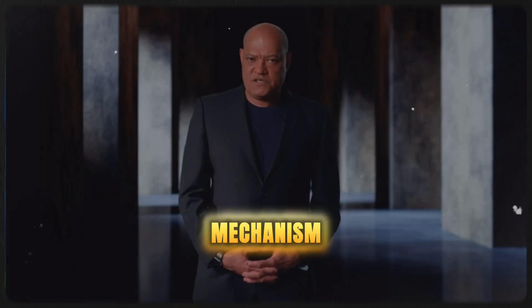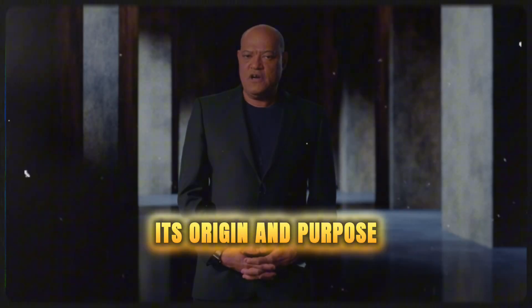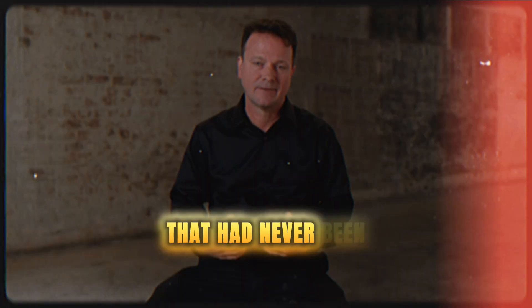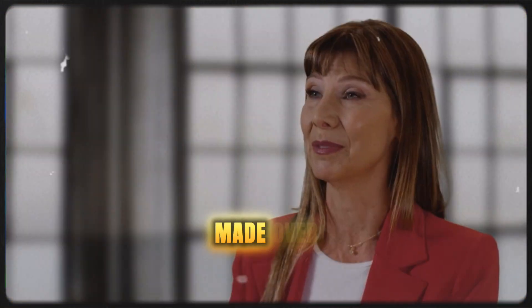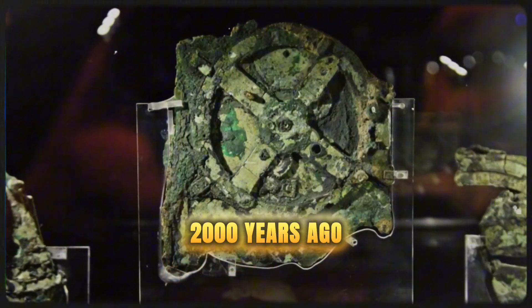Known as the Antikythera Mechanism, its origin and purpose are shrouded in secrecy. The entire facade of it is covered with writing that had never been seen previously. How is it possible that this thing was made over 2,000 years ago?